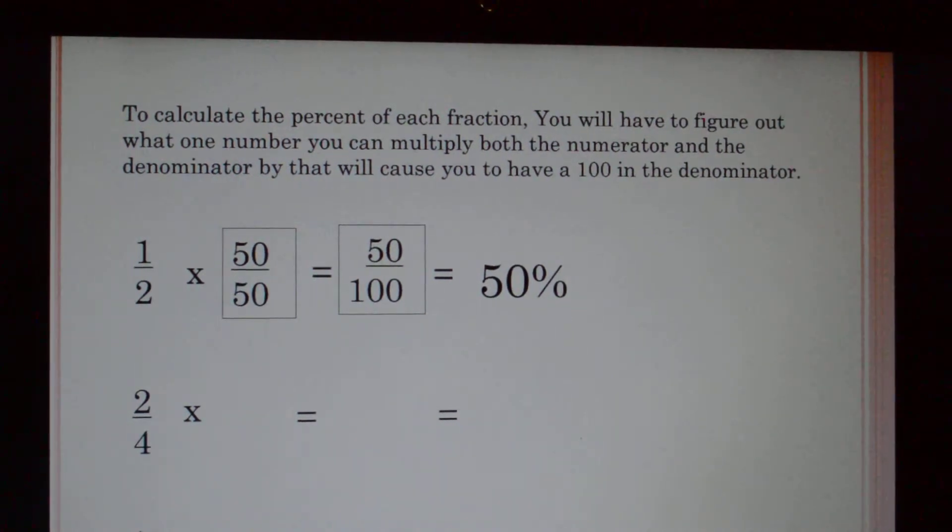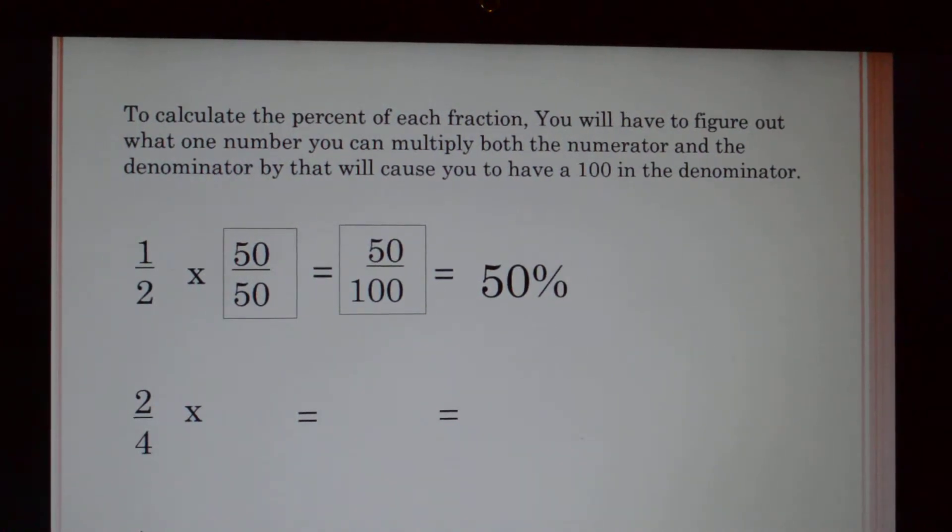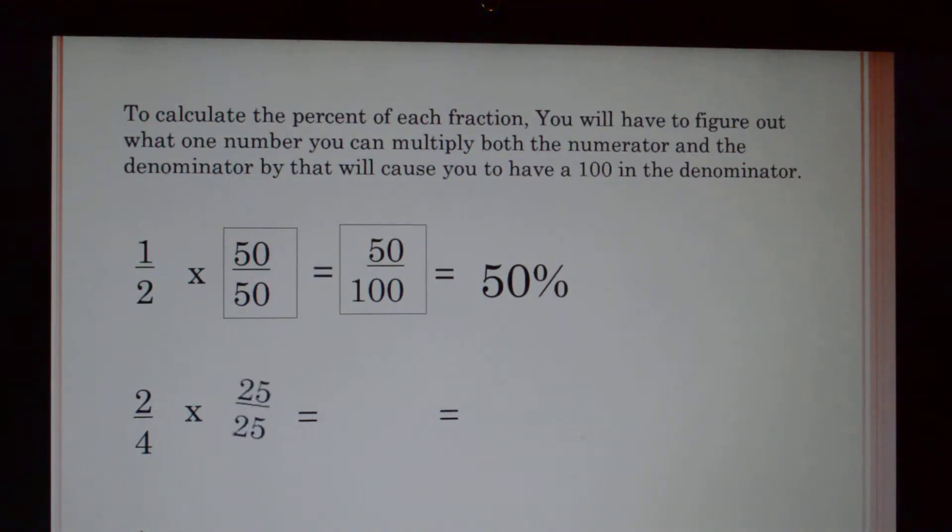What number multiplied by four will give me a hundred in my denominator? Well we know that's twenty-five. So I'm going to multiply two fourths times 25 over 25. Two times twenty-five is fifty and four times twenty-five is a hundred. That gives me fifty percent again.